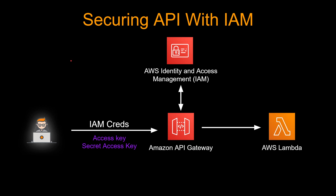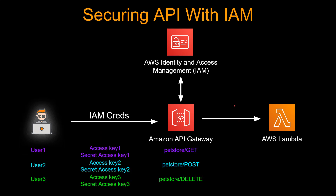Let's start with securing an API with IAM. In this method, the user passes an access key and secret access key when calling the API. This access key and secret access key is tied to a policy, and that policy is tied to a user. That policy should have access to calling this particular method. So after the API is invoked with these credentials, API Gateway goes to IAM and validates those keys. If everything is good, the method gets executed — in this case, the backend is Lambda. One advantage of using IAM credentials is you can apply granular access.